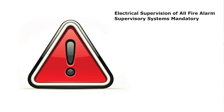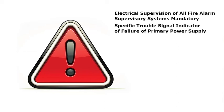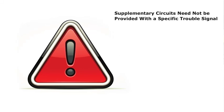It's important to note that all fire alarm supervisory systems should be electrically supervised, so the occurrence of a single open or single ground condition in the installation wiring system that prevents normal operation or causes failure of the primary power supply source is indicated by a specific trouble signal. Also, for supplementary circuits in an electric fire alarm system, it is not necessary to be provided with a specific trouble signal.